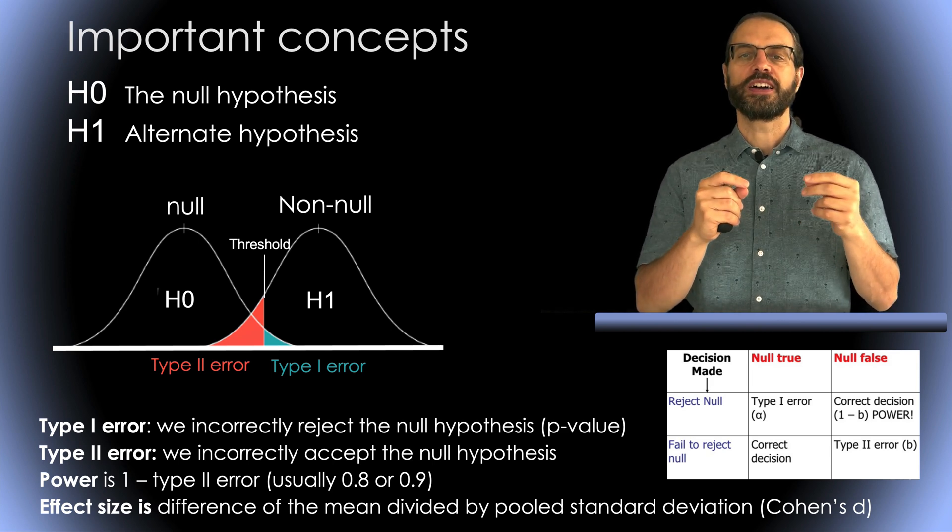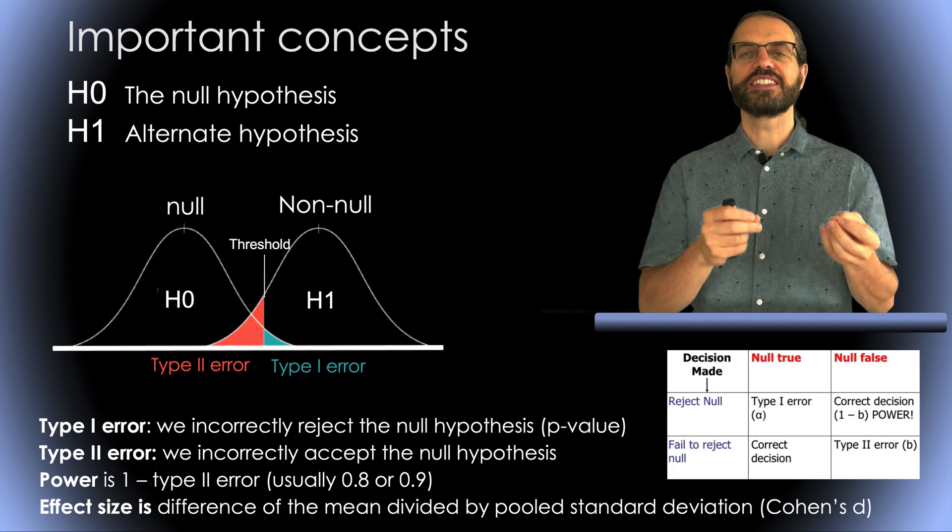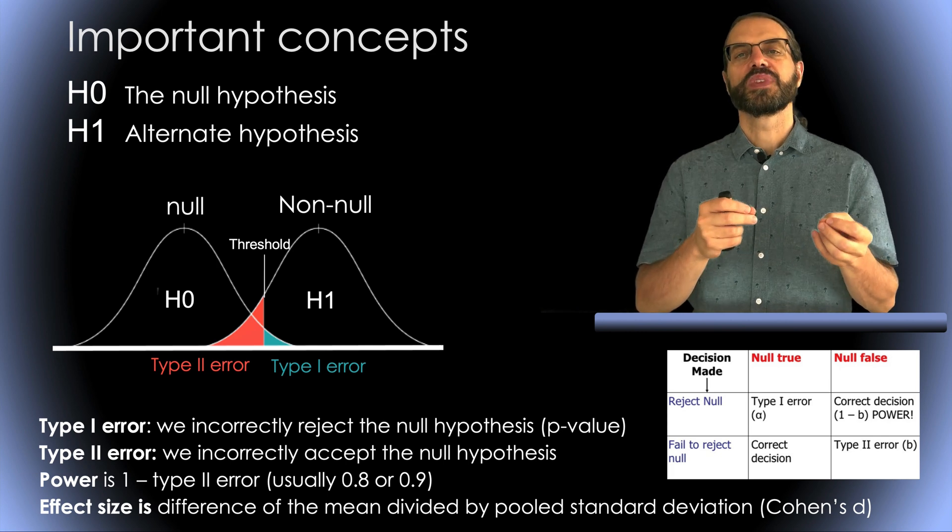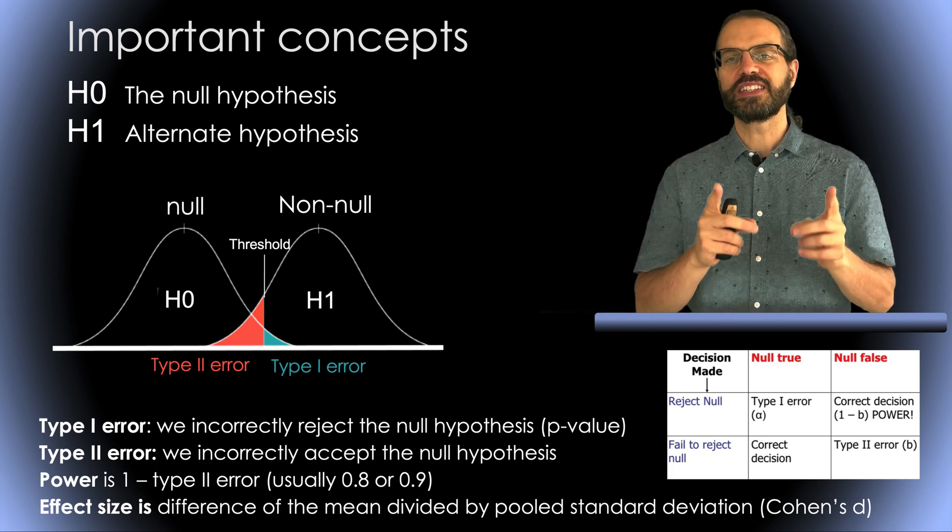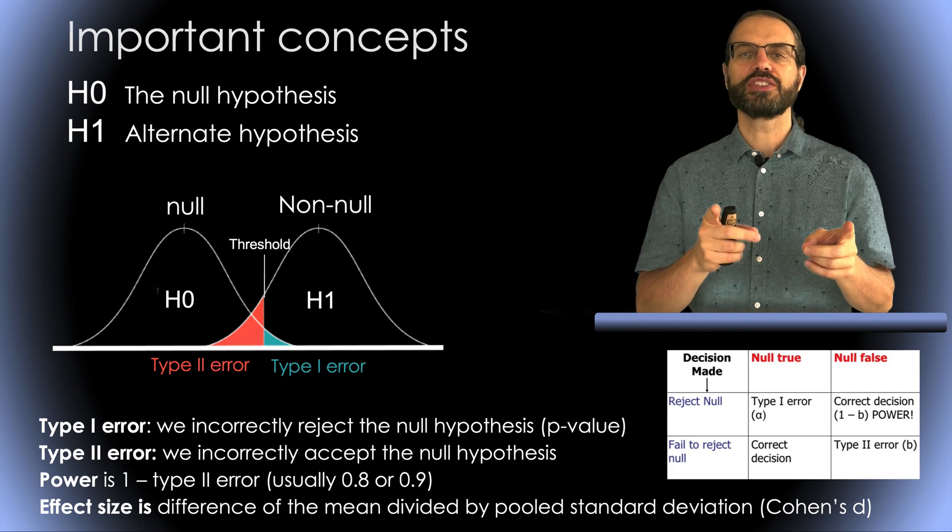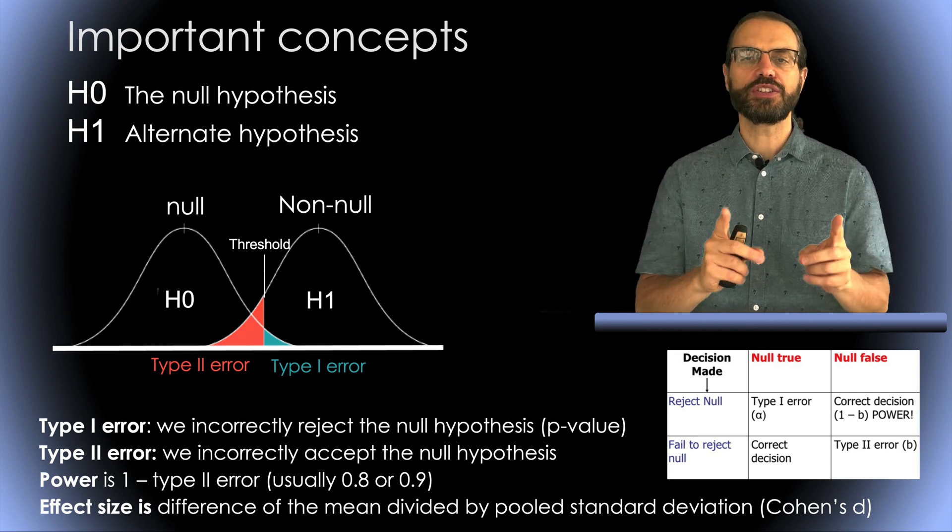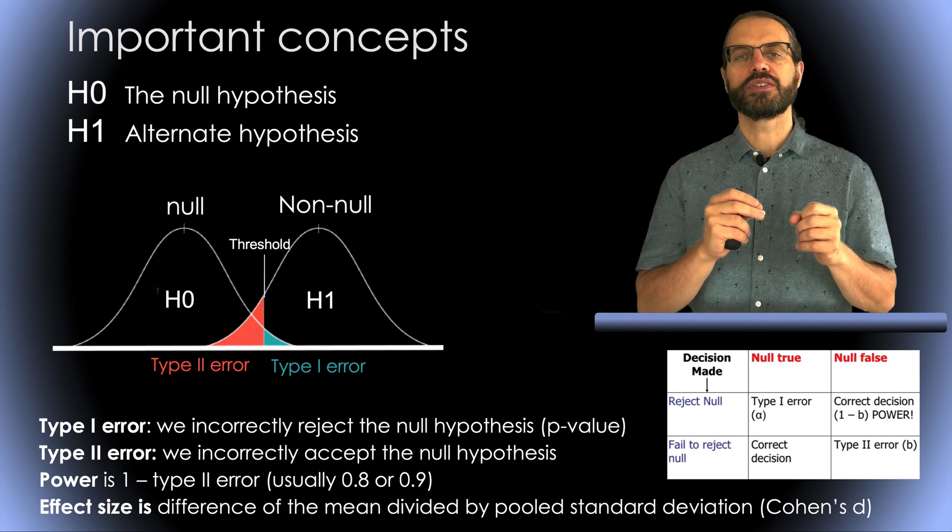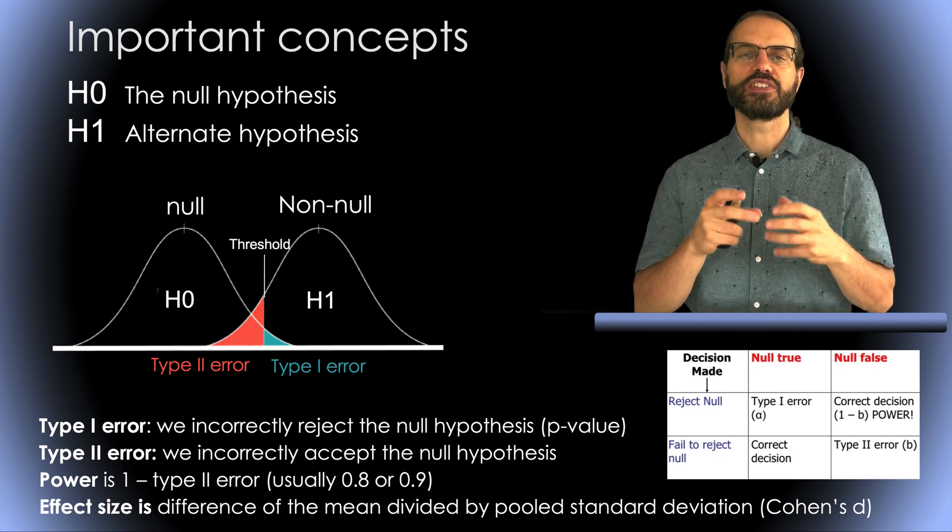You might have heard the quote, absence of evidence is not evidence of absence. A derived concept is statistical power, which is 1 minus the type 2 error. The higher the statistical power, the less likely you are to accept the null hypothesis when it is false.